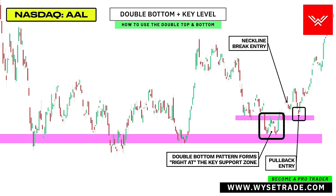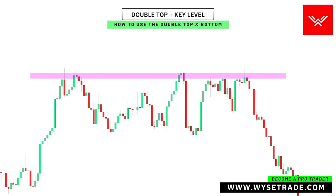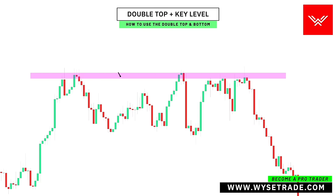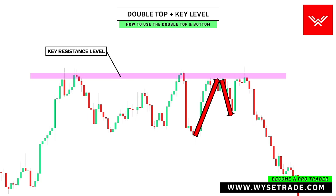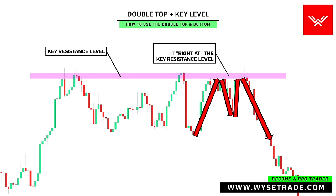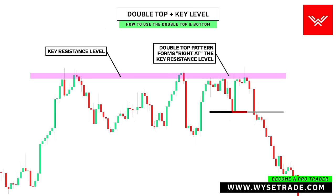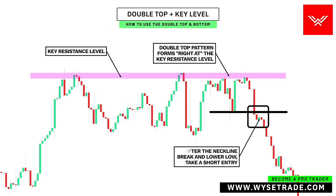Going in the opposite direction: you first identify your key resistance level through these reversal points. As price comes back up, it creates a double top pattern right at the resistance level. Neckline placed like this. And once price breaks through the neckline and makes a lower low, you would take a short entry.